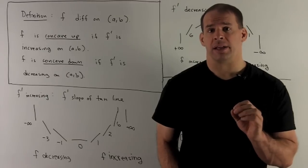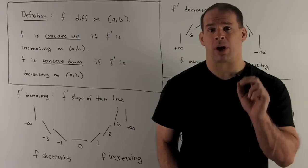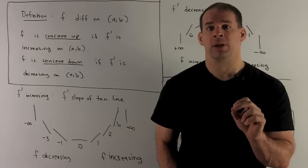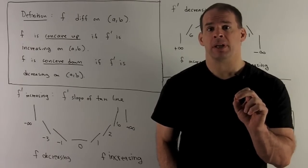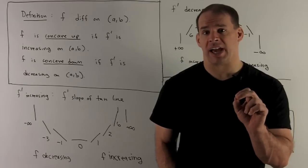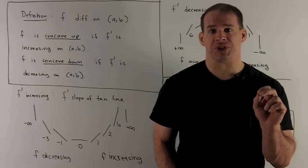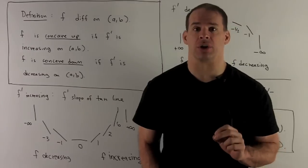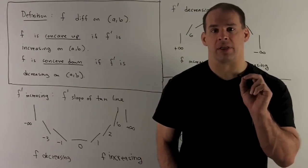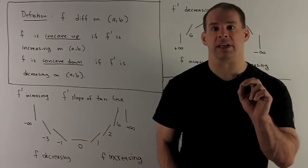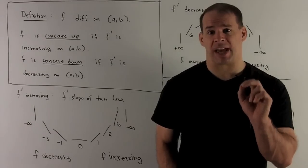The game we're trying to play is to connect the derivatives of a function to properties of its graph. We've already seen the first derivative — it tells us where horizontal tangent lines are, and also about regions of increasing and decreasing on the graph. Now we're going to take a look at another property: concavity. Concavity is going to be controlled by the second derivative.